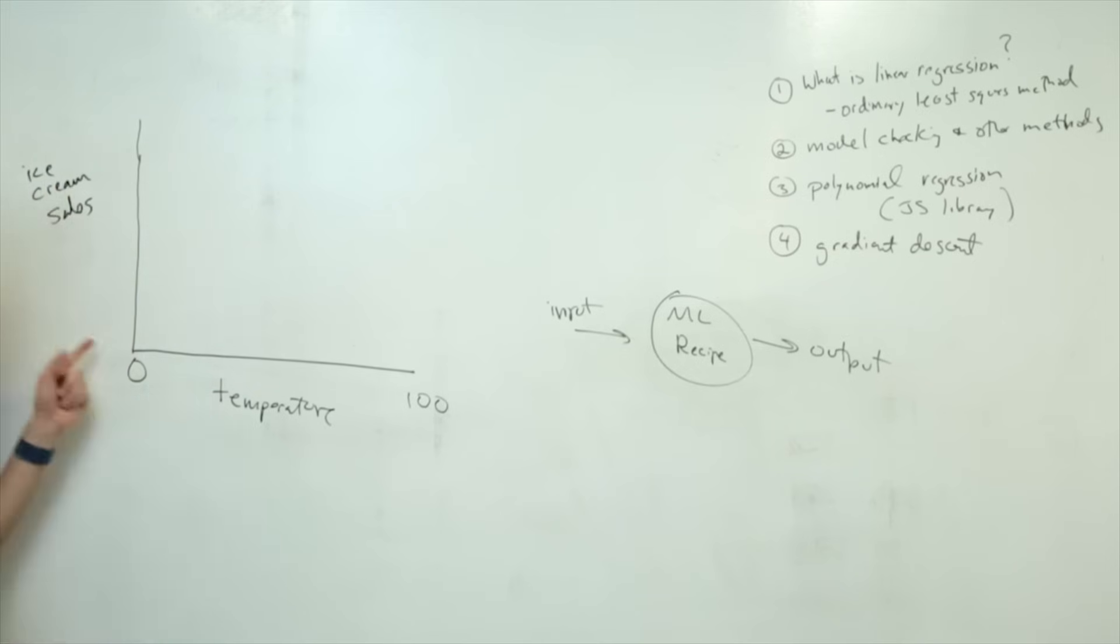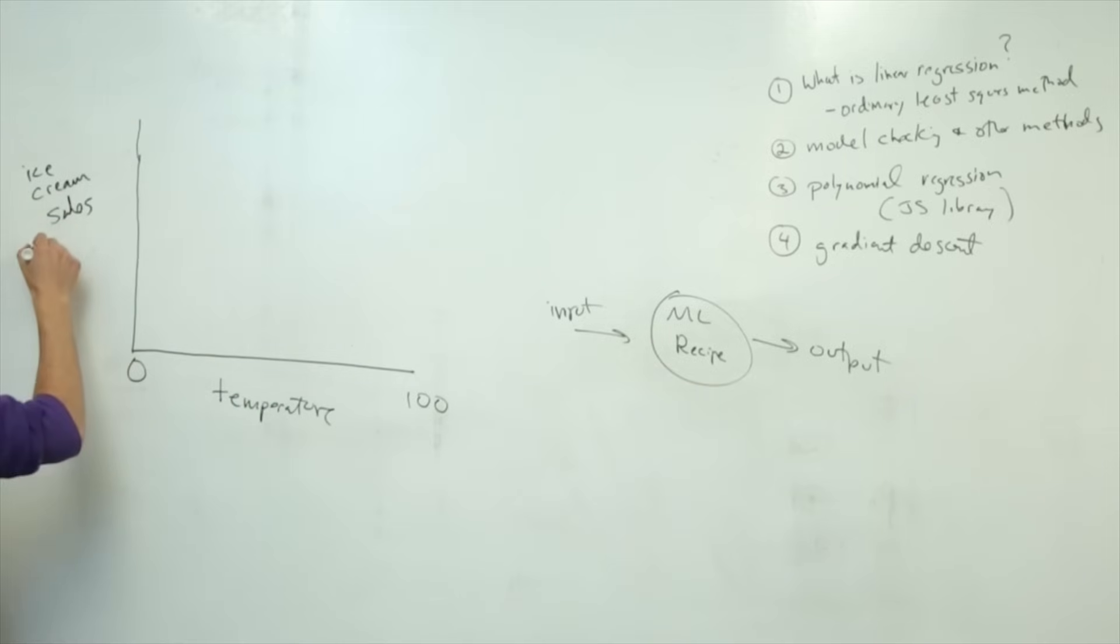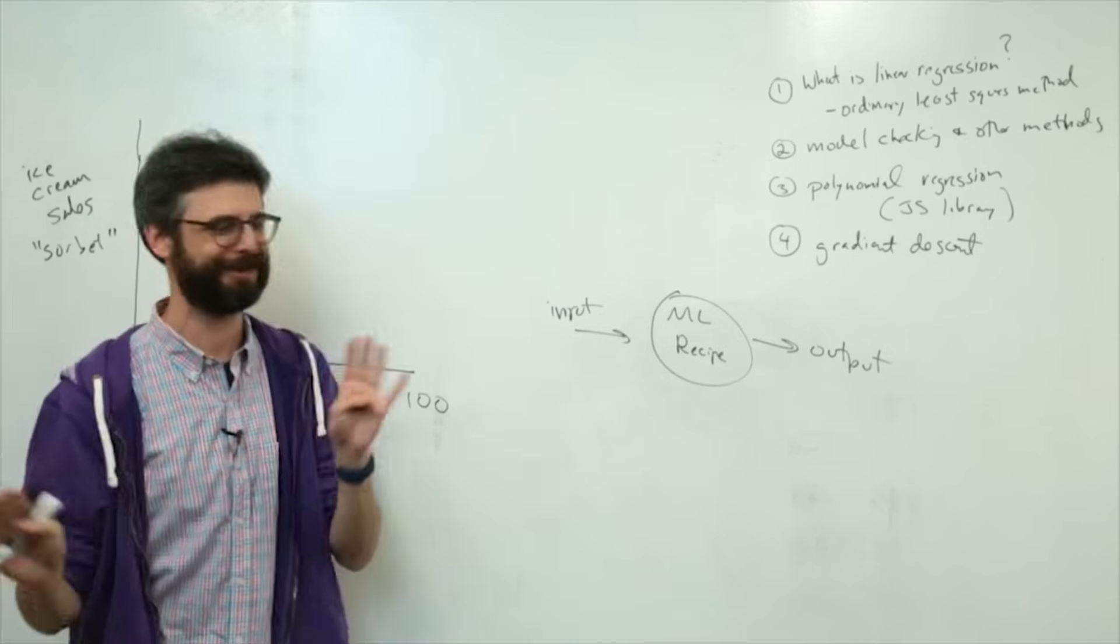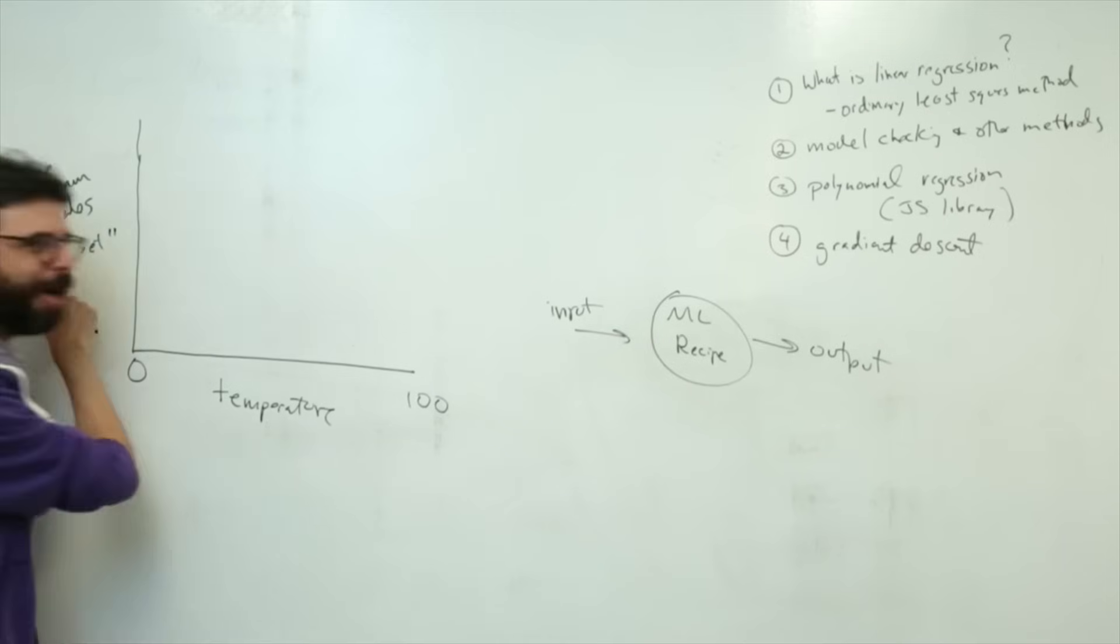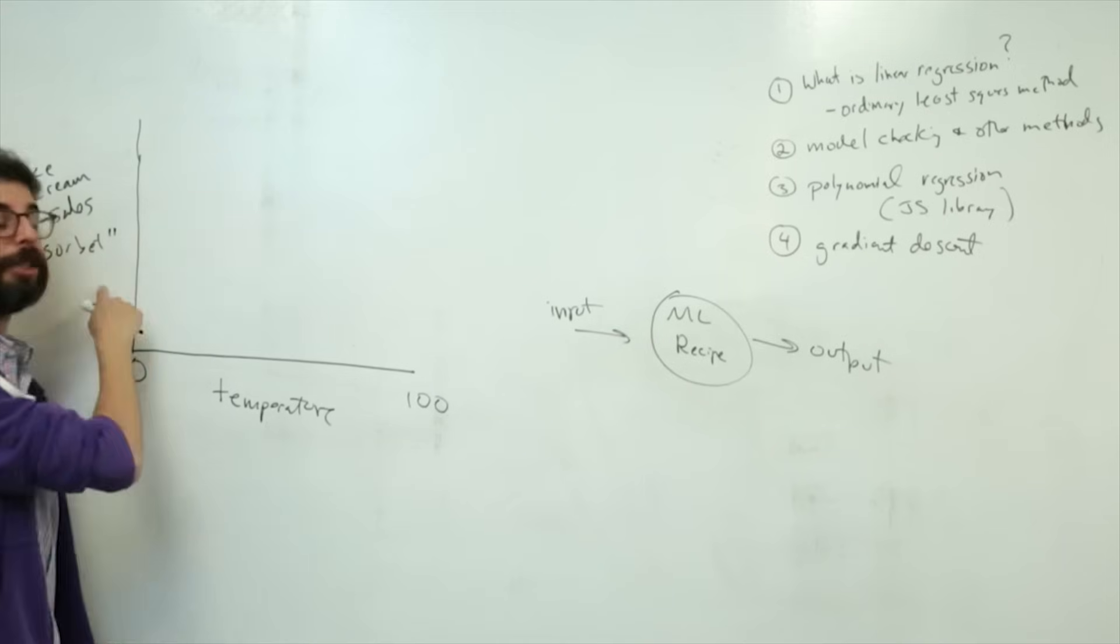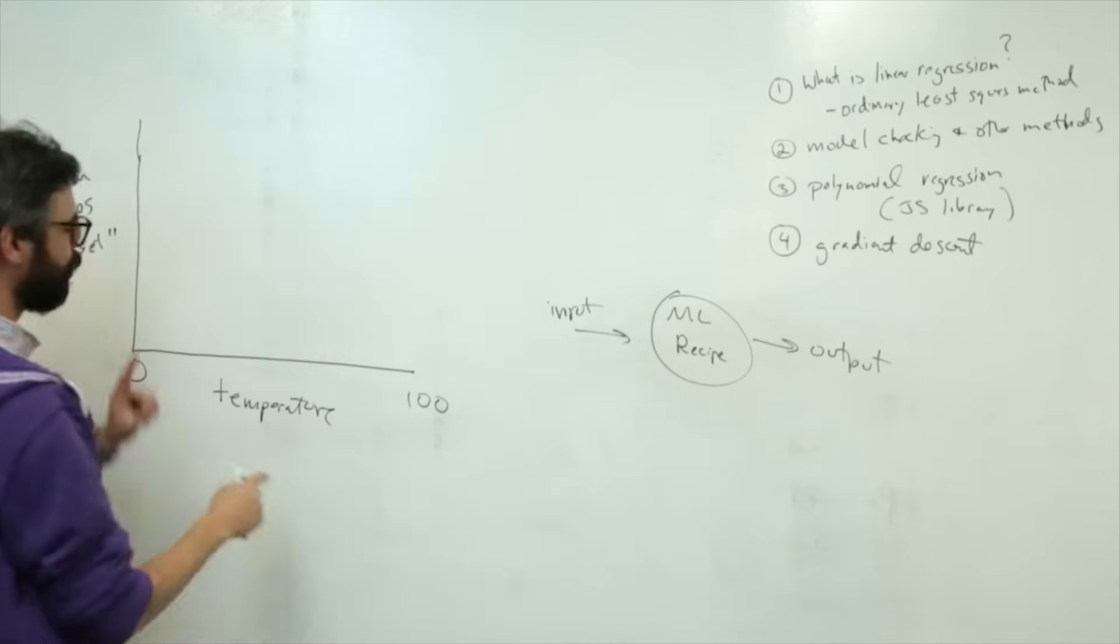And then the y-axis will be ice cream sales. And this was suggested in the chat. But I'm going to add to this sorbet in quotes for no reason, just because dairy doesn't really agree with me, just in case you were wondering. I like sorbet.